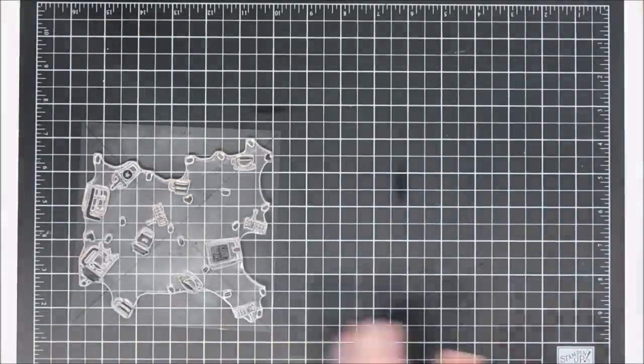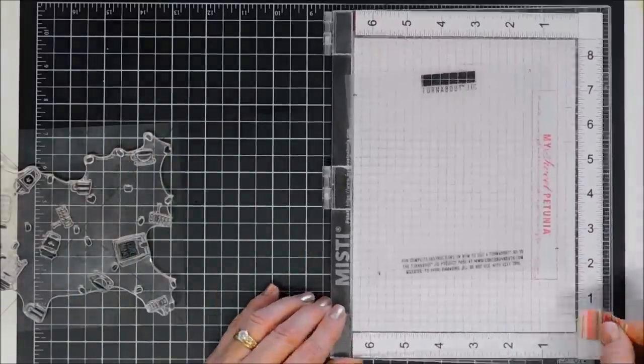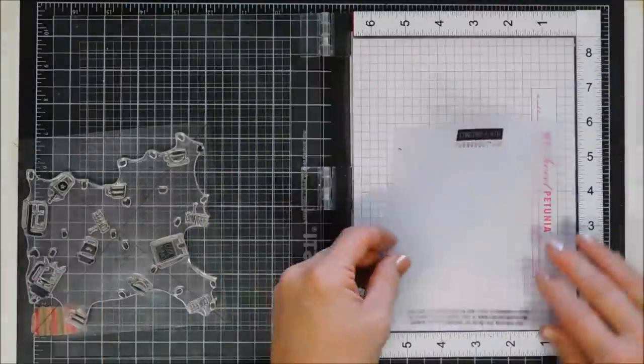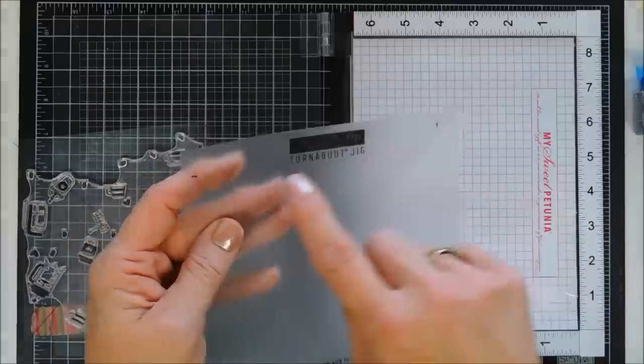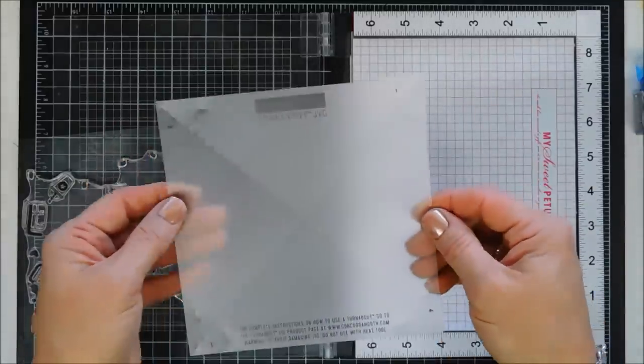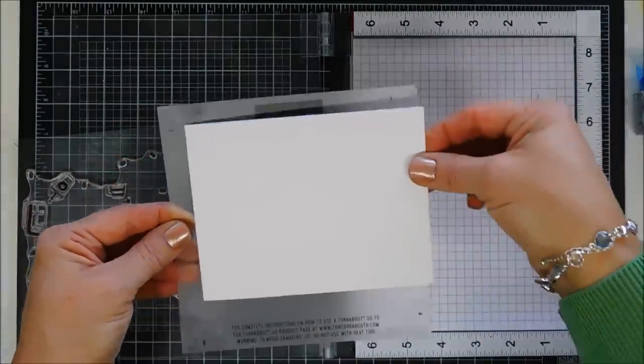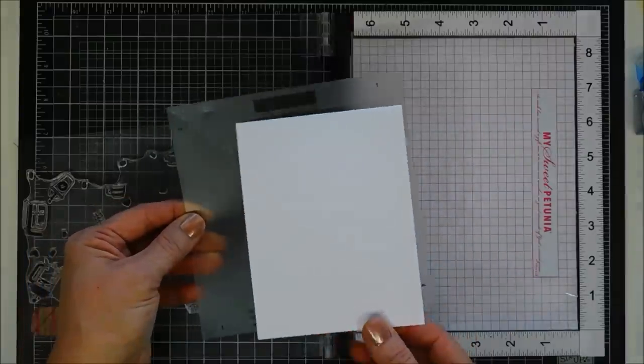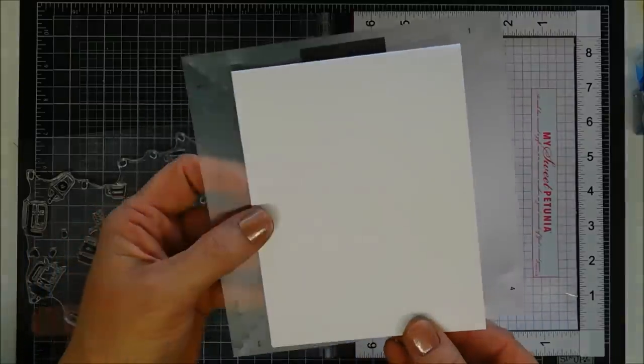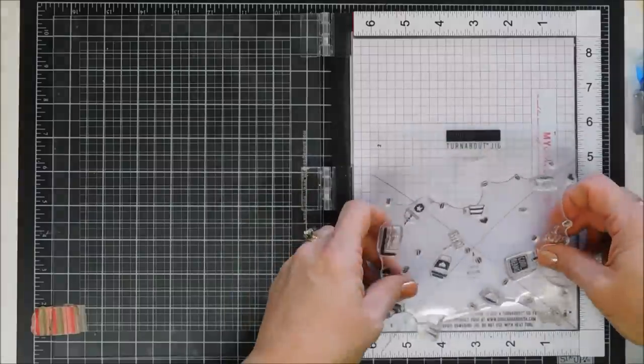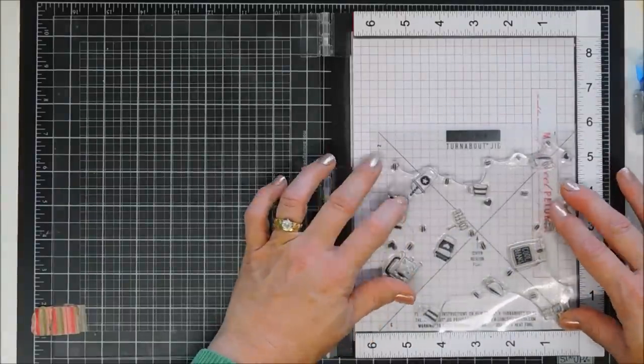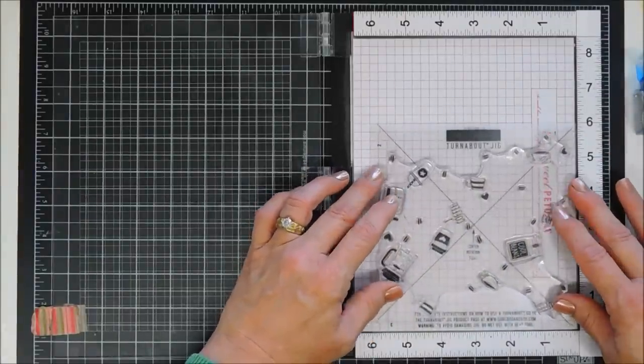Now I'm going to bring in my MISTI. With turnabout stamps you do need a stamp positioner, and it just makes it way easier. You can see the little notches for portrait style and then there's notches for landscape style card. You just want to align those up. I'm going to add a little bit of tape adhesive to that turnabout jig.